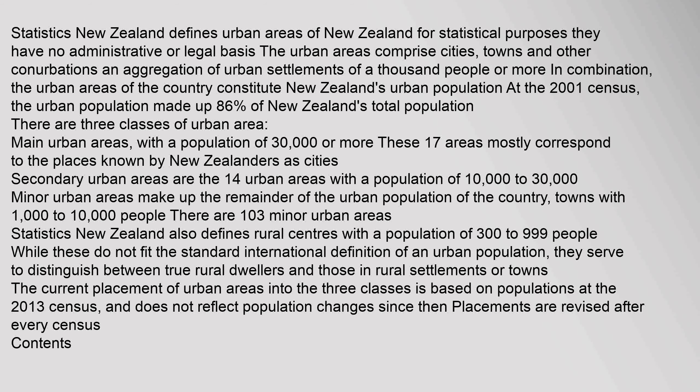There are three classes of urban area. Main urban areas have a population of 30,000 or more; these 17 areas mostly correspond to the places known by New Zealanders as cities. Secondary urban areas are the 14 urban areas with a population of 10,000 to 30,000. Minor urban areas make up the remainder, comprising towns with 1,000 to 10,000 people — there are 103 minor urban areas. Statistics New Zealand also defines rural centres with a population of 300 to 999 people. The current placement is based on populations at the 2013 census and is revised after every census.